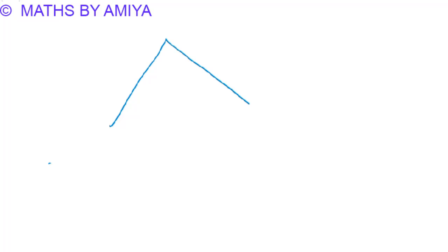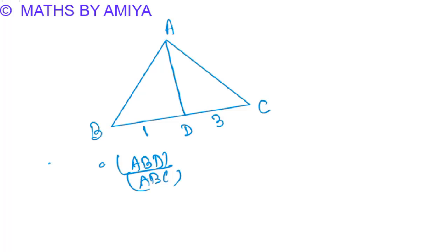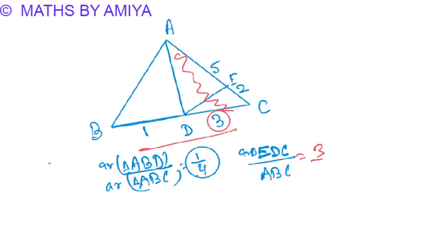The first concept I will use is finding the area of any triangle in terms of base. If we have triangle ABC and the ratio of BD to DC is 1 is to 2:3, the area ratio of triangle ABD upon ABC is nothing but BD is 1 and the total base is 4.